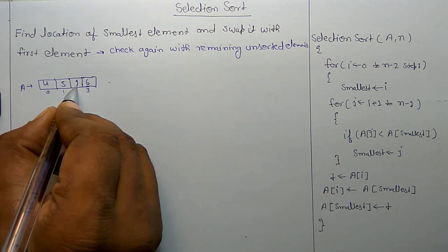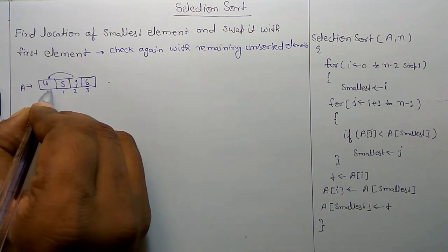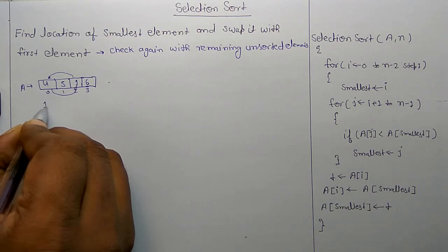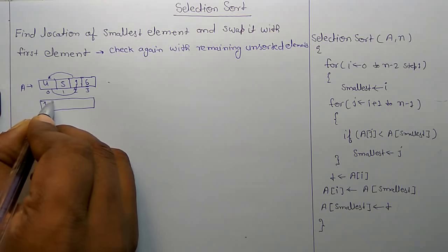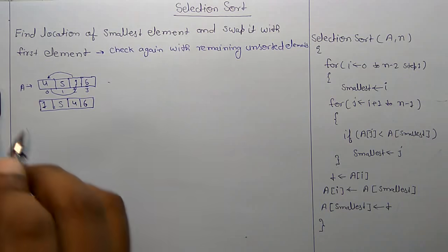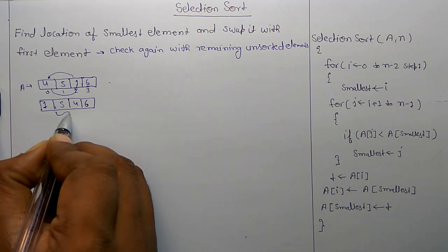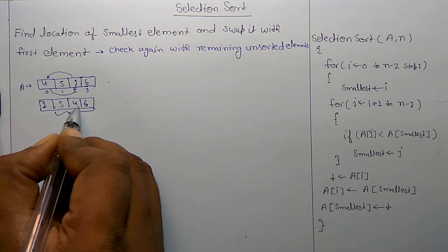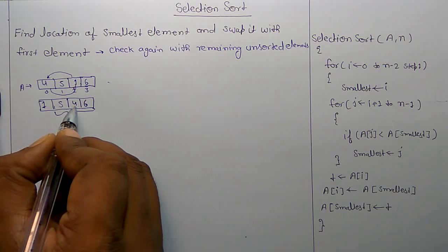So first is the sorted place, remaining is 5, 4, and 6. In this subset, again you have to find the minimum element and swap it with the first element. In this subset, the first element is 5, and the smallest value in the whole subarray is 4.